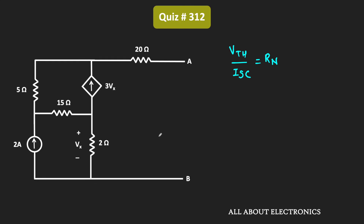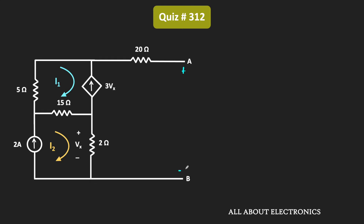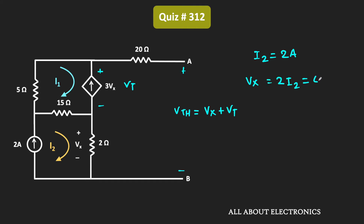First, let us find the Thevenin's equivalent voltage seen across terminals A and B. There are two loops and the currents in these two loops are I1 and I2 respectively. This Thevenin's equivalent voltage is the summation of the voltage across the dependent current source as well as Vx. Let's say the voltage across the dependent current source is Vt, so Vth equals Vx plus Vt. Now here, current I2 is equal to 2A, which means Vx equals 2 times I2, that is equal to 4V.